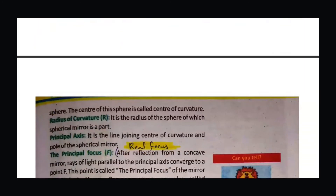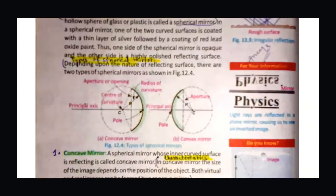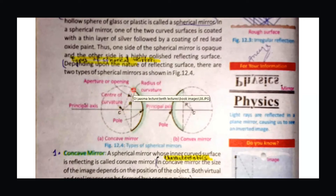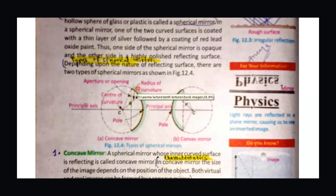The next term is the radius of curvature. The radius of curvature is basically the radius of the sphere. If you look at the arrow in the diagram, the radius of the sphere represents the radius of curvature. So the radius of curvature is the radius of that sphere of which you have the convex or concave mirror. We have now discussed pole, center of curvature, and radius of curvature.